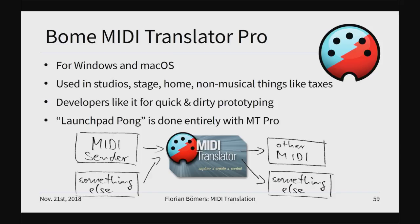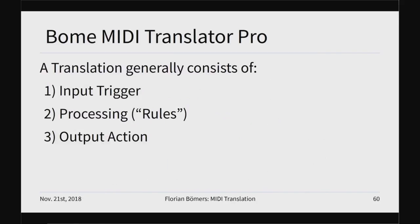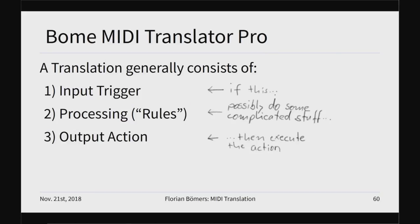You can see it translates everything to everything. The general way you set up a translation rule in MIDI Translator is you define the input trigger — for example a MIDI message — you can do some processing on it, and then there's an outgoing action: what is the response to that trigger? It can be a keystroke, it can be another MIDI message, it can be anything that is supported by the software.